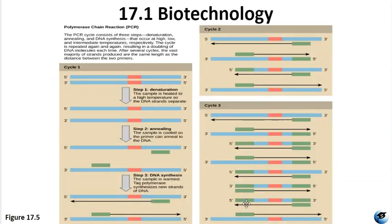Figure 17.5 shows the PCR reactions. Primers — short pieces of complementary DNA — bind with the genomic DNA using the Taq polymerase and the deoxynucleotides added to the reaction mixture. In RT-PCR, cDNA is made from an RNA template instead of a DNA template before the PCR begins.